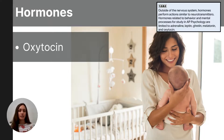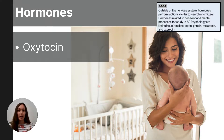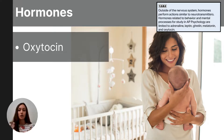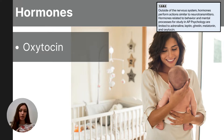Oxytocin is often called the love hormone or the bonding hormone because of its role in social bonding and emotional attachment. It is produced by the hypothalamus and released into the bloodstream by the pituitary gland. Oxytocin plays a key role in the bonding between mother and infant during childbirth and breastfeeding, as well as forming attachments between romantic partners and during social interactions.